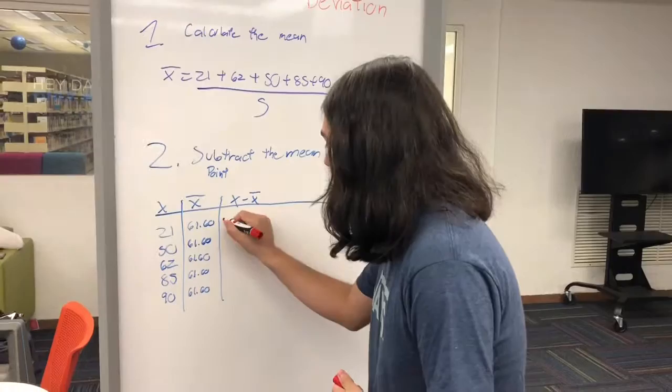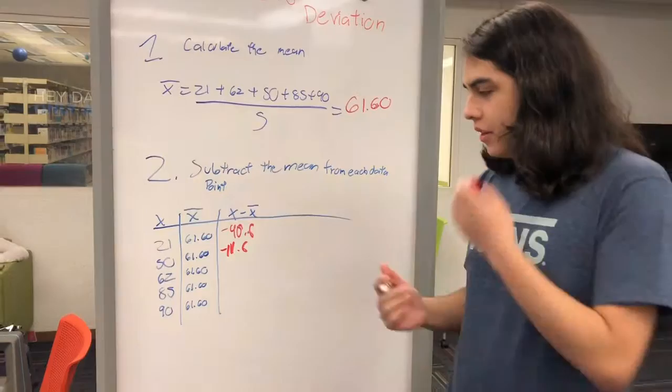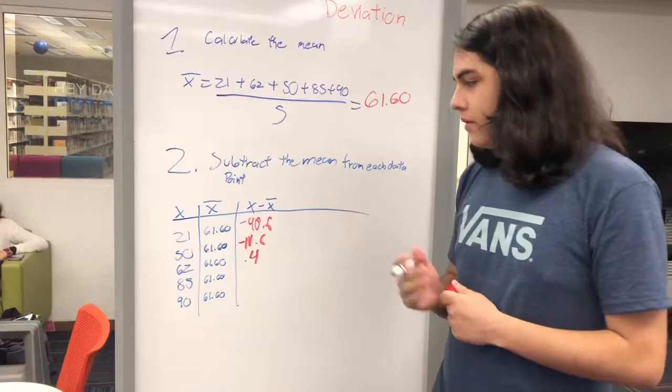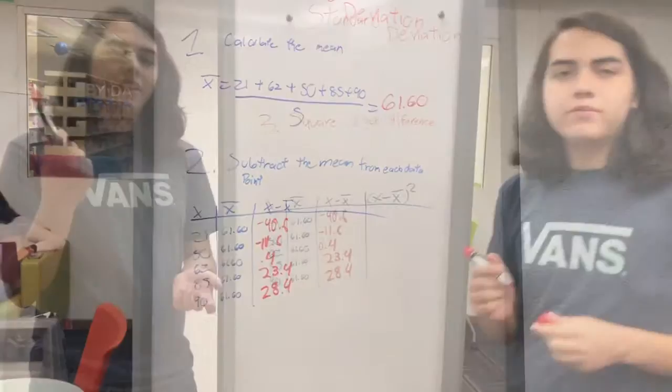So, the first point is minus 40.6. The second one is minus 11.6. The third one is 0.4. The fourth one is 23.4. And the last one is 28.4.